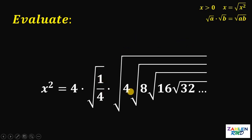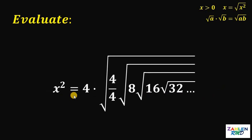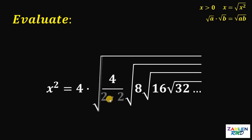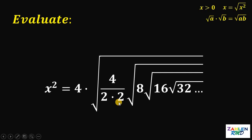Therefore, we can multiply the square root of one-fourth into the product. This gives us x squared equals 4 times square root of 4 over 4 times square root of 8 times square root of 16 times square root of 32, and so on. Now let's focus on this 4 over 4. The 4 in the denominator can be written as 2 times 2, so 4 over 2 times 2 becomes 4 over 2 times one-half. And 4 divided by 2 is just 2, so we have 2 times one-half.